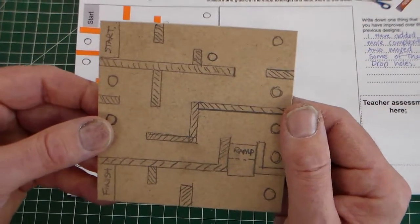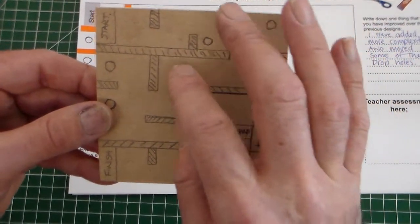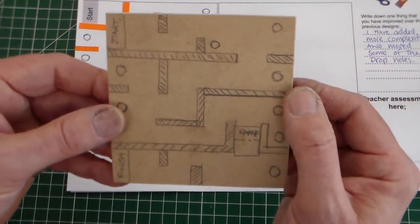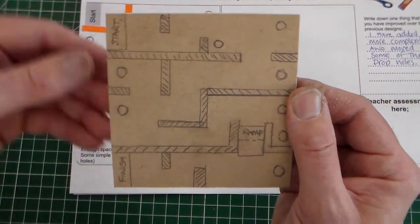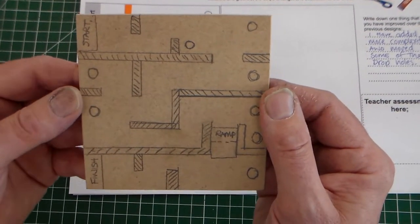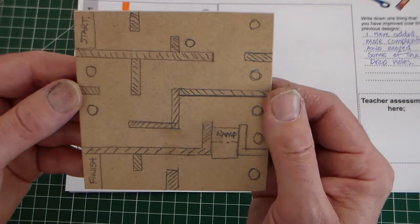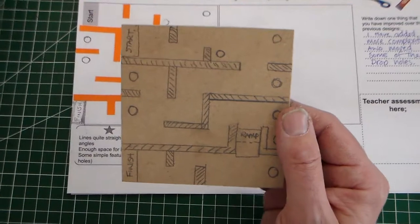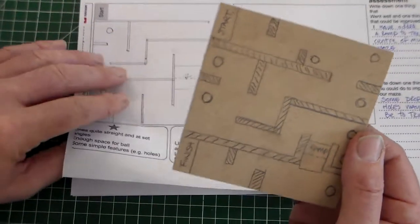And I've drawn that on and if you can see there, I've copied my design. I've copied and I've actually added another drop hole there as well. So I've further improved my design. And then there is my final design. So with my final design there, I'm now ready to start making my maze.